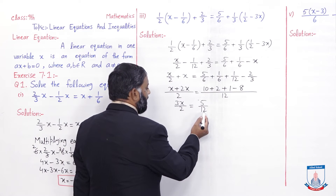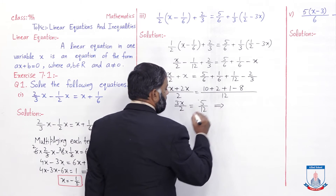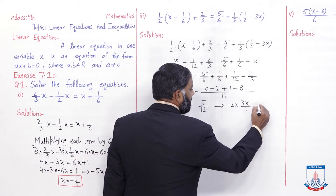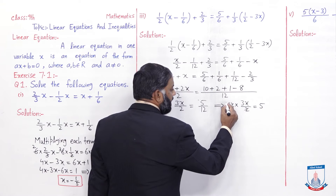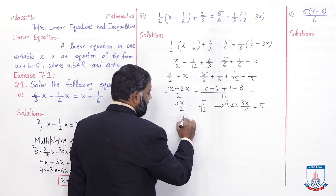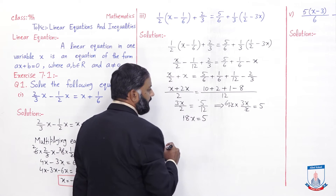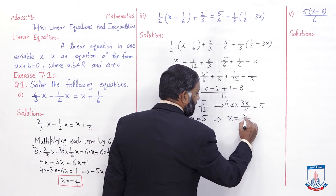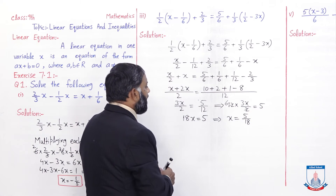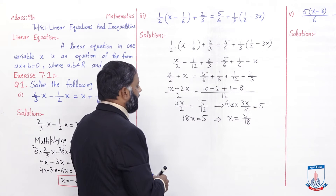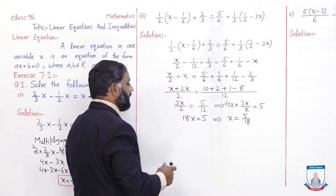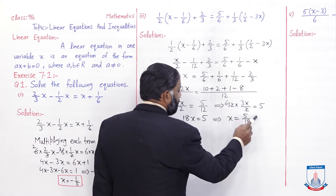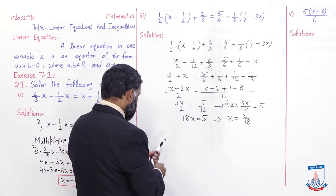Ab yeh 12 right side pe divide ho raha hai, left side pe aakar multiply ho jayega. 12 multiply by 3x over 2 equals 5. 2 aur 12 ki cutting ho jayegi: 6 times 3x equals 18x is equal to 5. Aur 18 ab right side pe jaakar divide hoga, to x ki value aayegi hamare paas 5 over 18. Ab yeh x ki value jo 5/18 aayi hai, isko hum given equation mein put karke check karenge whether both sides are equal or not.